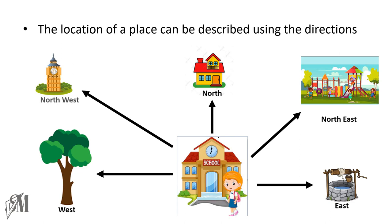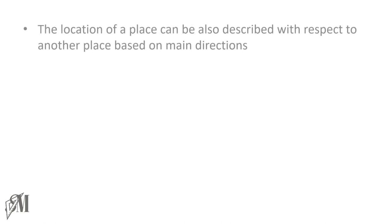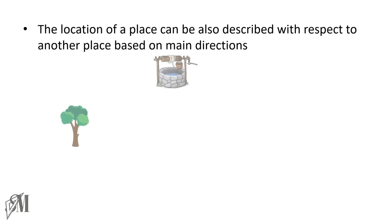But in this grade, we are going to learn something more than this. The location of a place can also be described with respect to another place based on the main directions. Now look at this diagram. Here you see a tree and a well. We are going to find out the location of the well as seen from the tree.